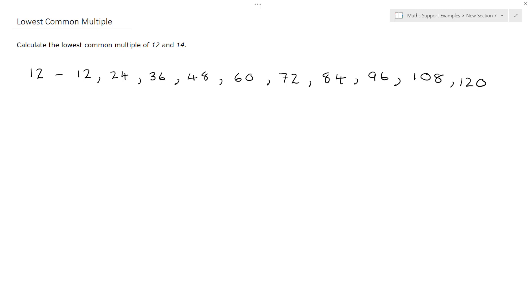Let's write out some of the multiples of 14. So 1 times 14 is 14. 2 lots of 14 is 28. 3 lots of 14 are 42. Next one will be 56. One after that will be 70. Then 84. But we'll stop there because we'll see that we have one in common.